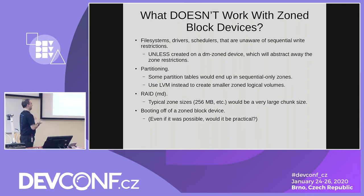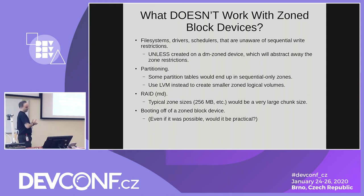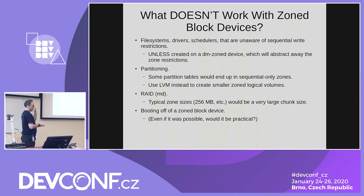What doesn't work with zone block devices? The applications that are less conducive are file systems, drivers, and schedulers that don't know the limits of sequential write restrictions. Also, some partition tables — particularly GPT — will have data that ends up in sequential-only zones at the end of the drive. Classically, SMR hard drives have sequential and random data areas at the beginning for the first 1%, and then the last 99% is sequential write required zones.